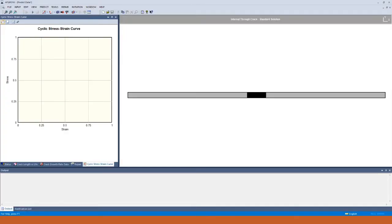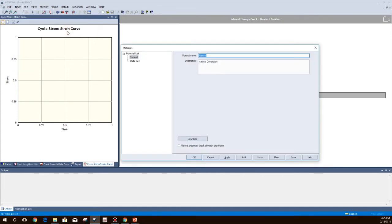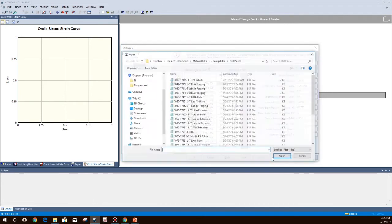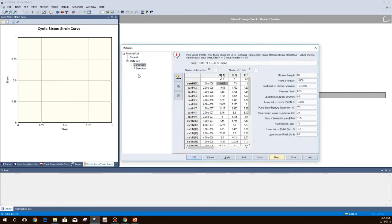To use this feature go to input material and then tabular lookup. You'll need to have the material properties crack direction dependent box checked in the lookup dialog. This will enable you to add material in the C and A direction. To add material in the C direction select the C direction under data set and you can read a file that you would like to use. You'll do the same for the A direction.